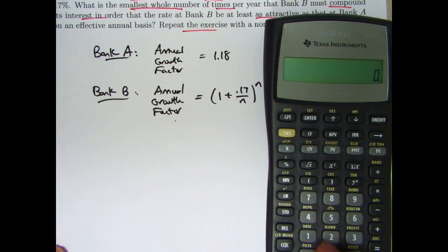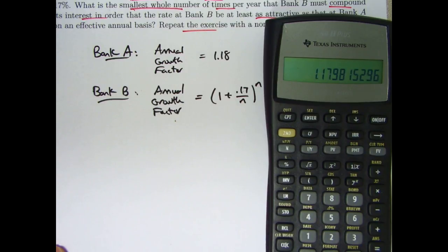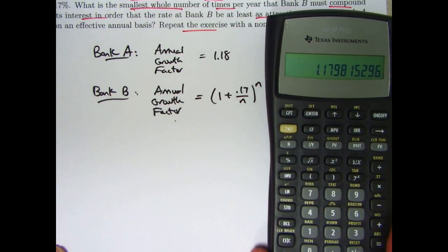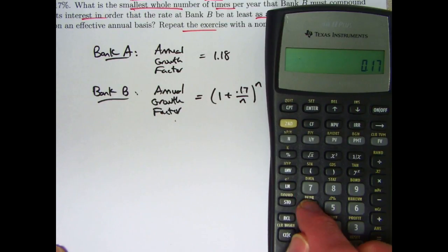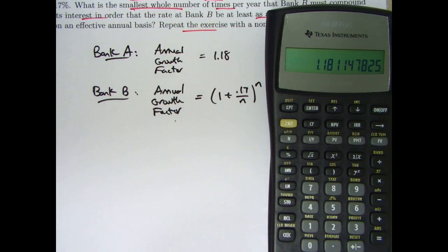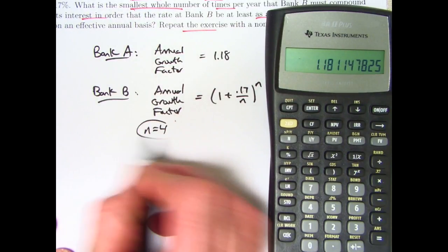So, now we try N equals 3, 0.17 divided by 3. Add 1, raised to the third power. Still not bigger than 1.18, so N equals 3 is not the answer, but we are very close. So, probably N equals 4 is going to be the answer. 0.17 divided by 4 plus 1 raised to the fourth power is indeed bigger than 1.18. N equals 4 is the answer to the first one.